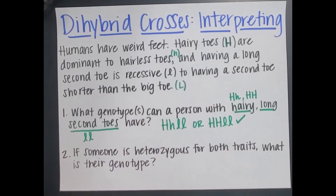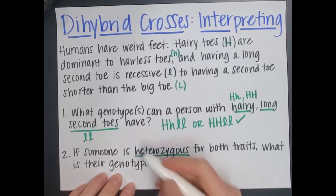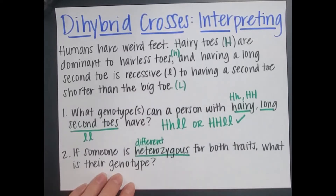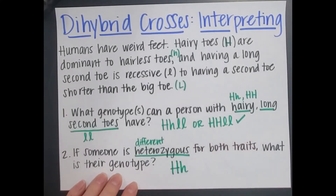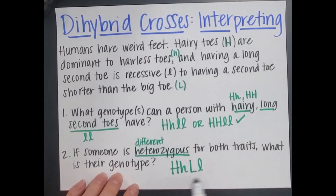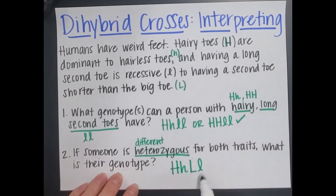Next, if someone is heterozygous for both traits, what is their genotype? The key word here is heterozygous — hetero means different, whereas homozygous means the same. So we're looking at different alleles for both traits. For hairy toes they need a big H and a little h; for the length of their second toe they need a big L and a little l. Their genotype is Hh Ll — dominant and recessive for both traits.